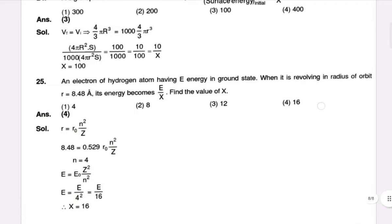Question 25 is: an electron of a hydrogen atom having energy E in the ground state, when it is revolving in a radius of orbit r equal to 8.48 Angstrom, its energy becomes E by x — find the value of x. Using r equal to r0 n squared by Z, with r0 equal to 0.529 Angstrom, we get n equal to 4.